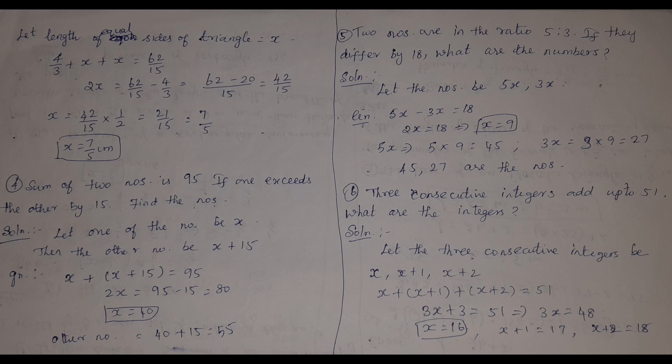The length of the equal sides is x. Perimeter = sum of all 3 sides, so: 4/3 + x + x = 62/15. Therefore 2x = 62/15 minus 4/3. Taking LCM and solving, x = 7/5 centimetres. So the length of either equal side is 7/5 centimetres.